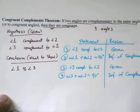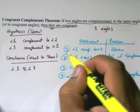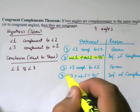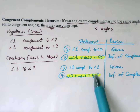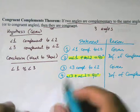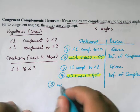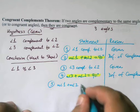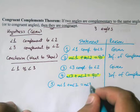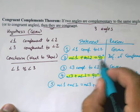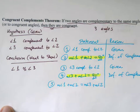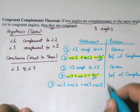Looking at these two statements, they are both equal to 90 degrees, so we can set them equal to each other. The measure of angle one plus the measure of angle two equals the measure of angle three plus the measure of angle two. This is allowable because when two expressions are equal to the same thing, they must be equal to each other — this is called the transitive property.